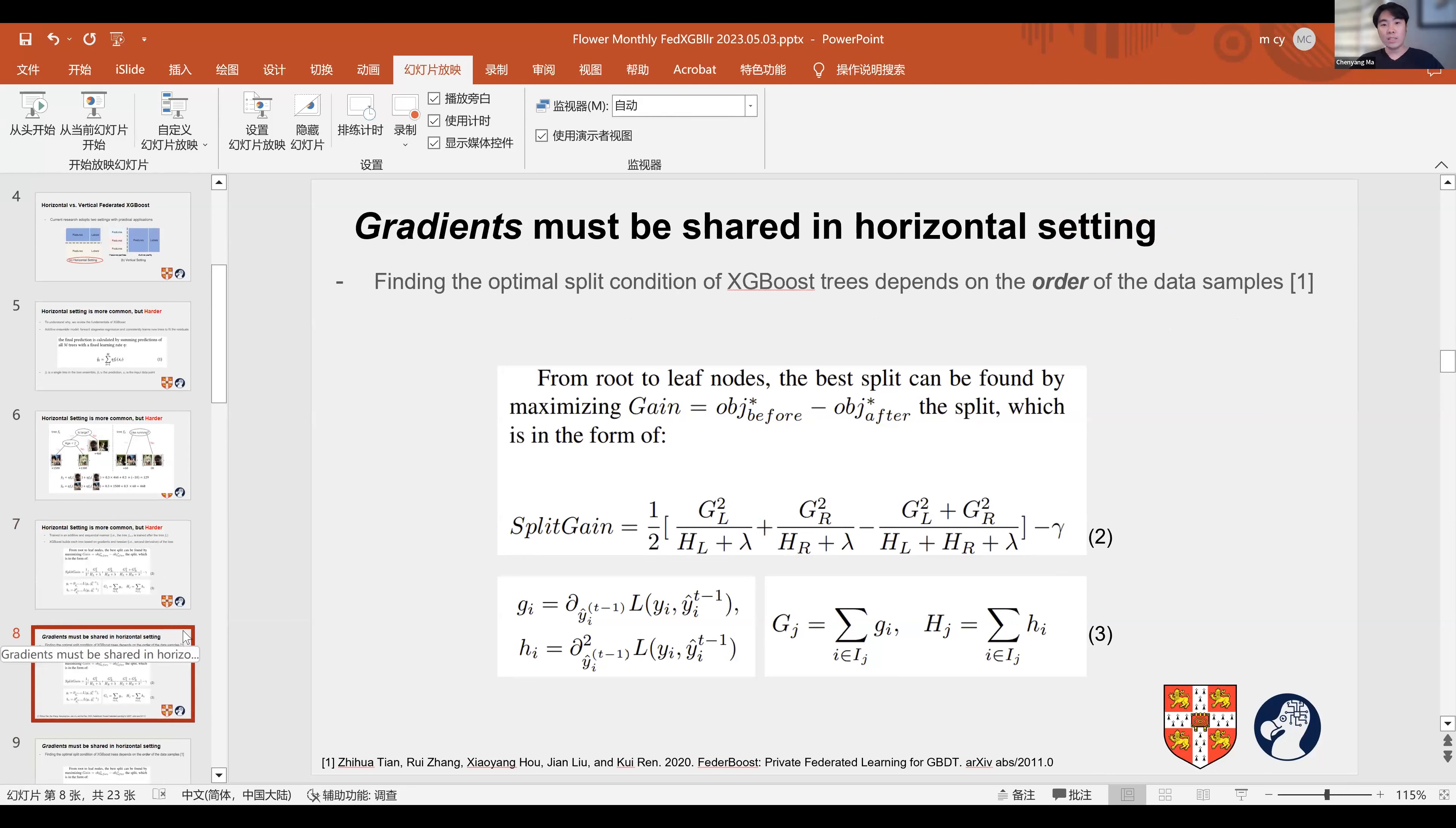Why is the training of horizontal federated XGBoost harder? This is because finding the optimal split condition of a single tree depends on the order of the data samples. As we see in equation two, we iterate the feature sets and partition the data into left and right according to feature constraints.